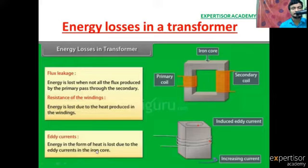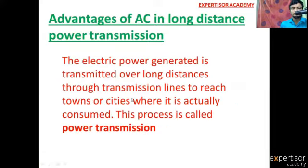Advantages of alternating current in long distance power transmission. The electric power generated is transmitted over long distances through transmission lines to reach towns or cities where it is actually consumed.